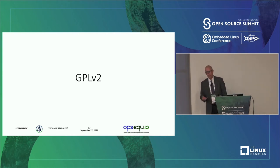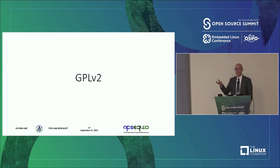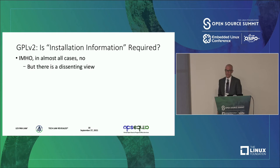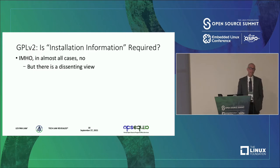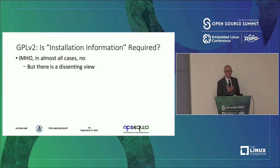Now I'm going to talk about GPL v2, which is a much more interesting issue. GPL v3 is really just a mechanical process of understanding how the license works — when you have to provide this information and what information you have to provide. GPL v2 is a different question altogether and one for which there is quite a bit of debate currently ongoing. In my opinion, under GPL v2 you are not required to provide installation information. However, there is a dissenting view on that point.